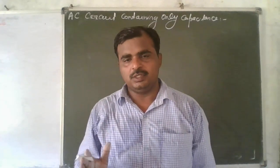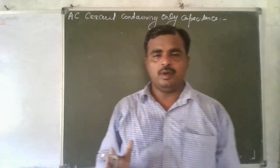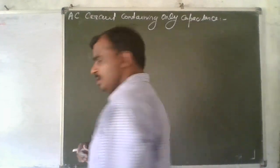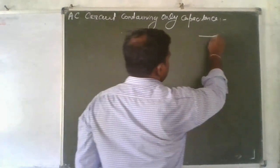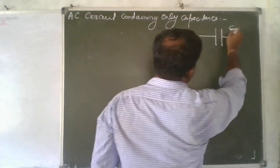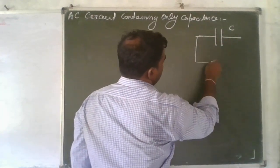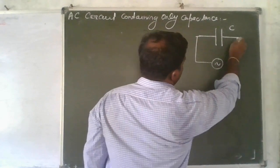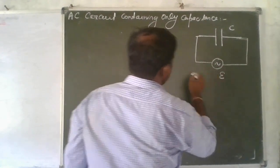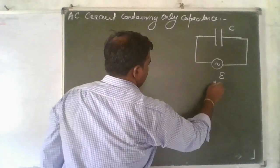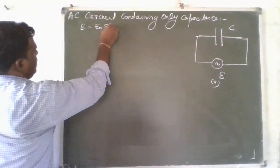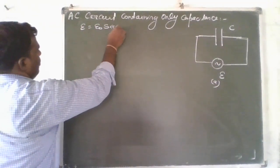Students, now we will discuss the AC circuit containing only a capacitor. This is the AC circuit containing only a capacitor of capacitance C. Here we will apply AC voltage, or alternating EMF, E, given by E equal to E naught sine omega T.